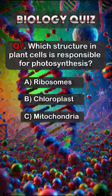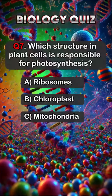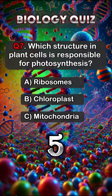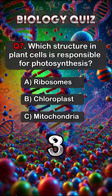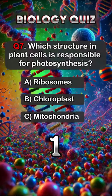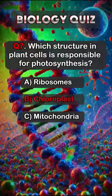Question 7. Which structure in plant cells is responsible for photosynthesis? Answer B. Chloroplast.